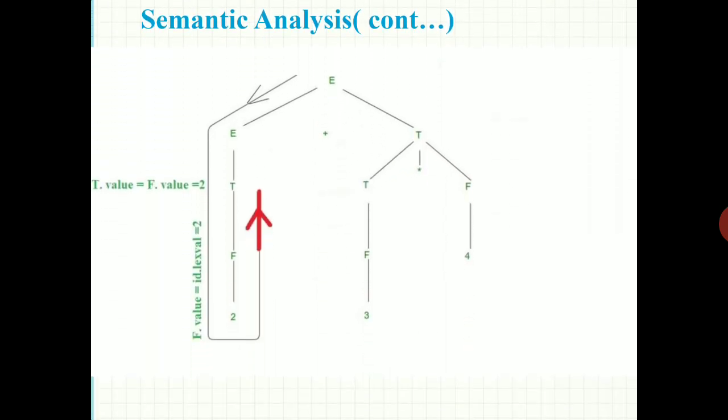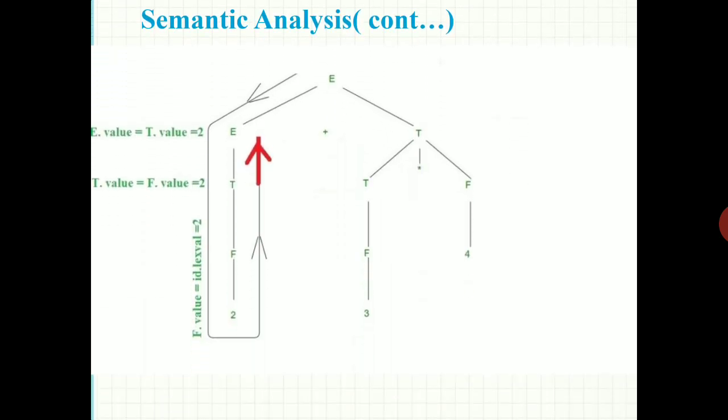Next, the value of F is reduced to T using the production T → F. Here we perform the semantic action T.val = F.val, so the value of T becomes 2. Then we perform the reduction E → T, and E.val becomes T.val, so the value of E becomes 2.